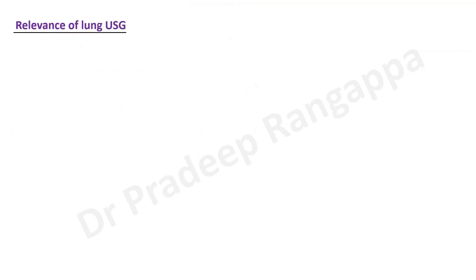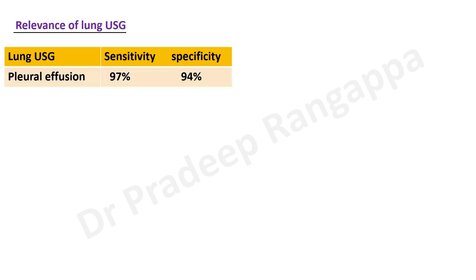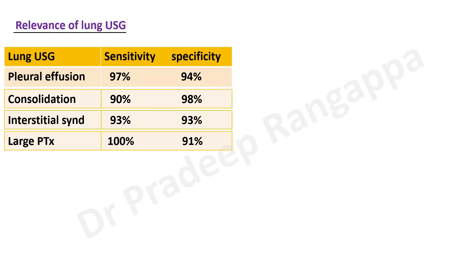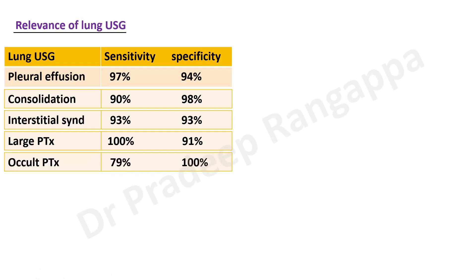What is the relevance of lung ultrasound? It is shown to be very valuable in determining various pathologies. For pleural effusions, sensitivity is 97% and specificity is 94%. For consolidation, sensitivity is 90% and specificity is 98%. For interstitial syndrome — pulmonary edema, cardiac or non-cardiac — sensitivity is 93% and specificity is 93%. For large pneumothorax, sensitivity is 100% and specificity is 91%. For occult pneumothorax, specificity is 100%.